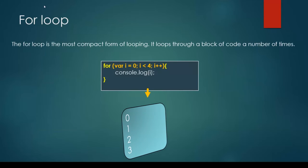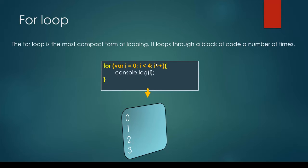First of all let's talk about the for loop. The for loop is the most compact form of looping — it loops through a block of code a number of times. This is the syntax we can use: we have to use the for keyword, define a variable i with a starting value of zero. While the i value is smaller than four, we keep incrementing the value of i, and within every iteration we keep logging the value of i.